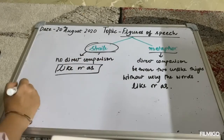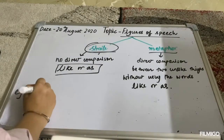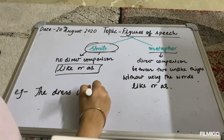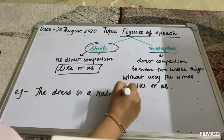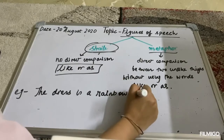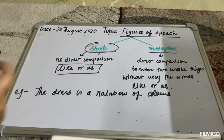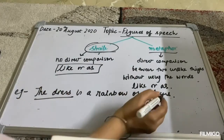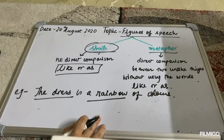Now if I say 'the dress is a rainbow of colours' — what are we doing here? We are comparing the dress directly with a rainbow, and we are saying that they are both colourful.